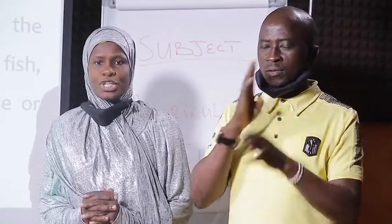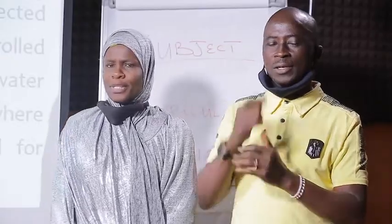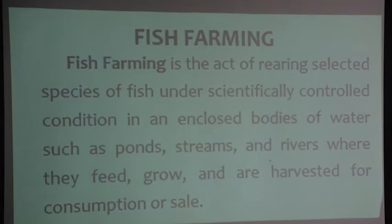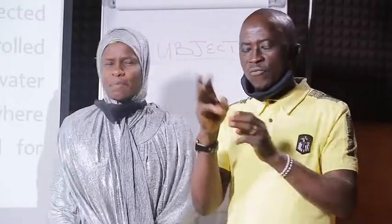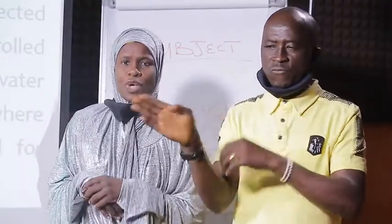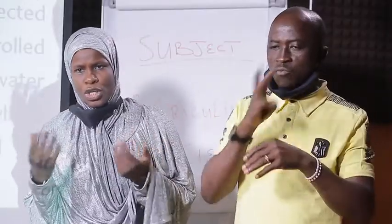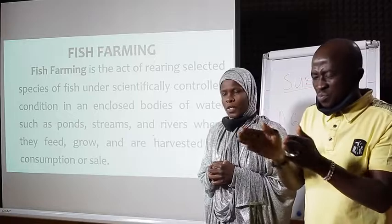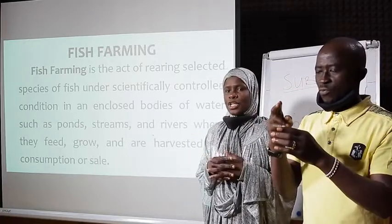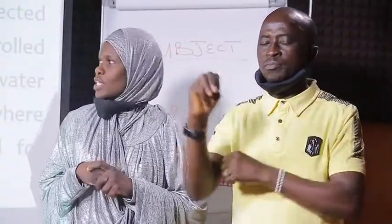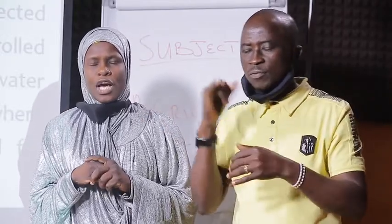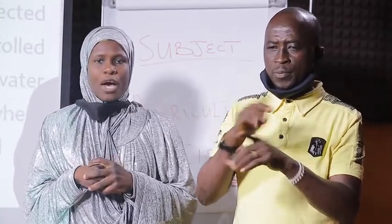Today we are going to talk about fish farming. Fish farming is the act of rearing selected species of fish under scientifically controlled conditions in an enclosed body of water, such as pond, stream, rivers, and where they feed, they grow, and are harvested for consumption. Examples of fishes used in fish farming include catfish, carpfish, tilapia, mudfish, etc. We use these fish specifically because most of them are resistant to disease and they grow and mature fast.